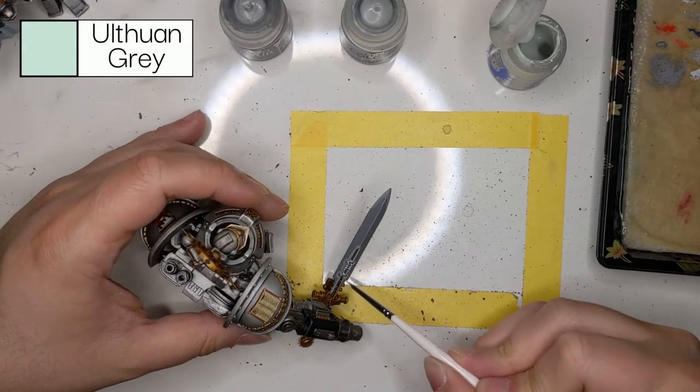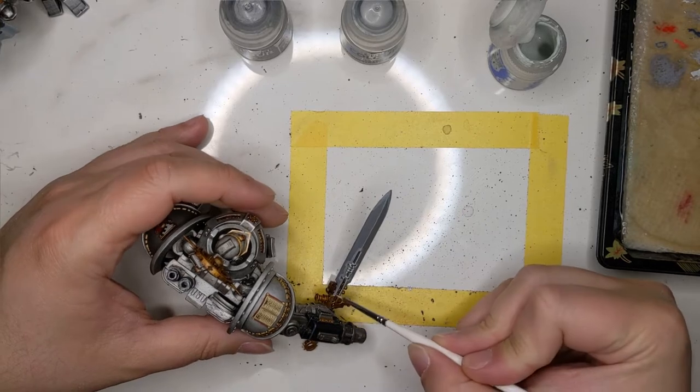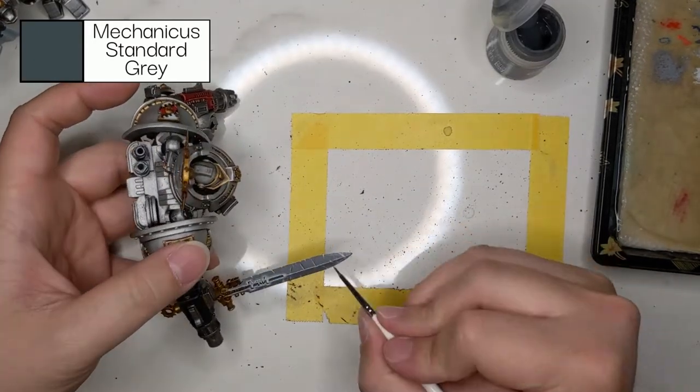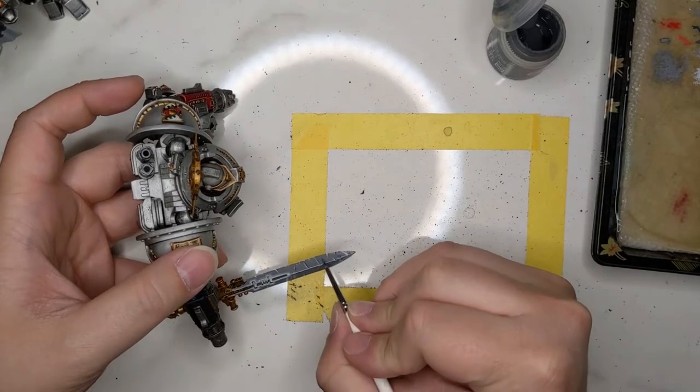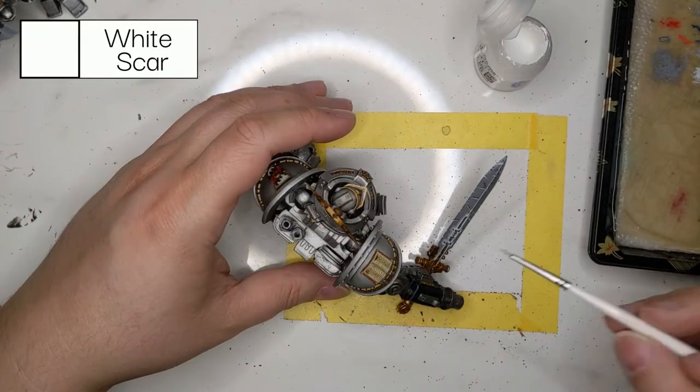Then with Ulthuan Grey to bring that up even brighter. What we're also going to do with Ulthuan Grey and with Mechanicus Standard Grey is add some scratches to the blade, because a sword like this is going to get some dings and dents.